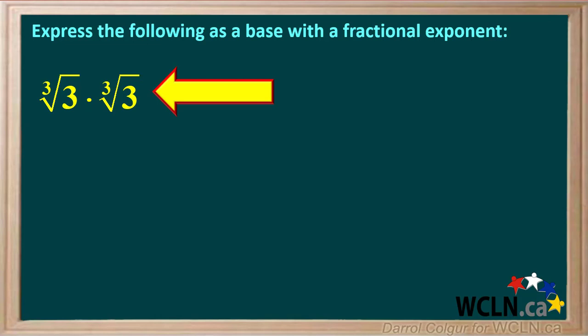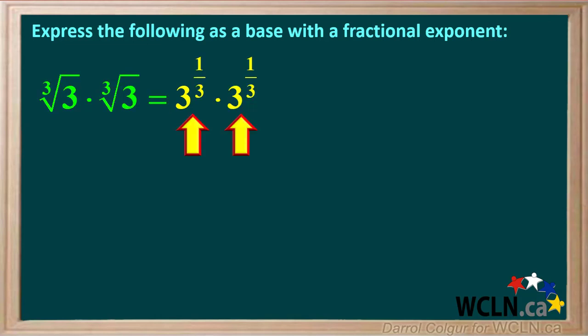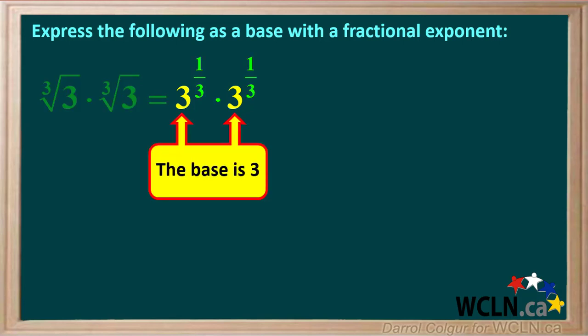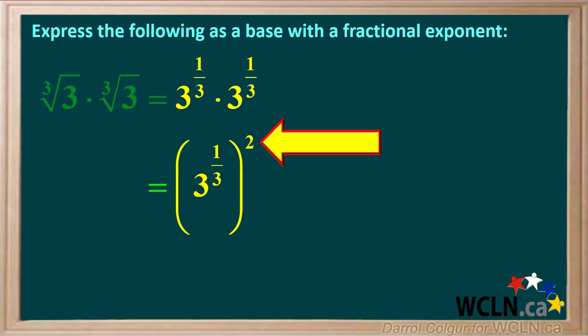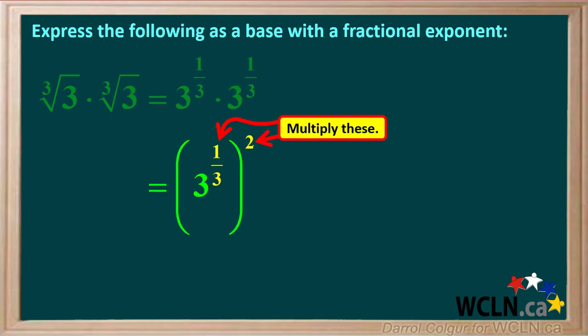Let's say we're asked to express the cube root of 3 times the cube root of 3 as a base with a fractional exponent. The cube root of 3 is 3 to the power of 1 third, so we now have 3 to the power of 1 third times 3 to the power of 1 third. These both have the same base, which is 3. So 3 to the 1 third times 3 to the 1 third is 3 to the 1 third squared. When we have an exponent inside the bracket and an exponent outside the bracket, we just multiply them.